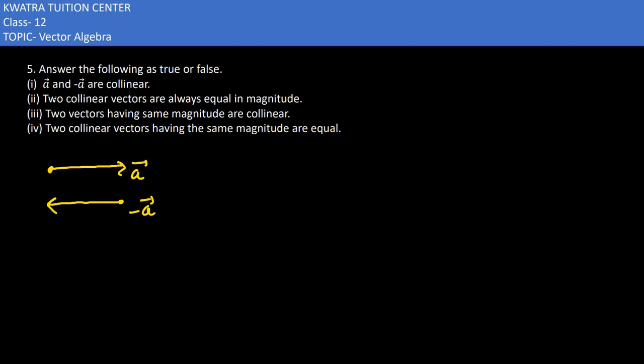So these are parallel to each other. Yes, they can be collinear, so this would be true. Second one, it says two collinear vectors are always equal in magnitude.